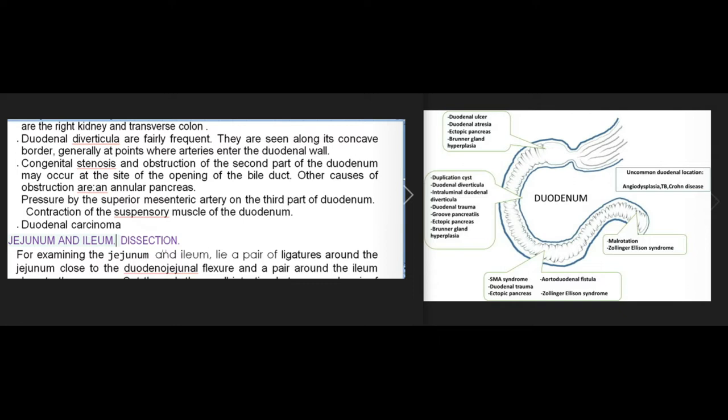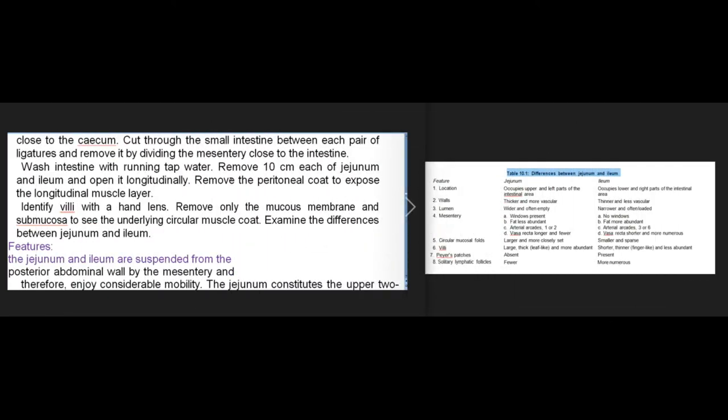For examining the jejunum and ileum in dissection, tie a pair of ligatures around the jejunum close to the duodenojejunal flexure and a pair around the ileum close to the cecum. Cut through the small intestine between each pair of ligatures, remove it by dividing the mesentery close to the intestine, and wash with running tap water. Remove 10 centimeters each of jejunum and ileum, open longitudinally, remove the peritoneal coat to expose the longitudinal muscle layer, and identify villi with a hand lens.